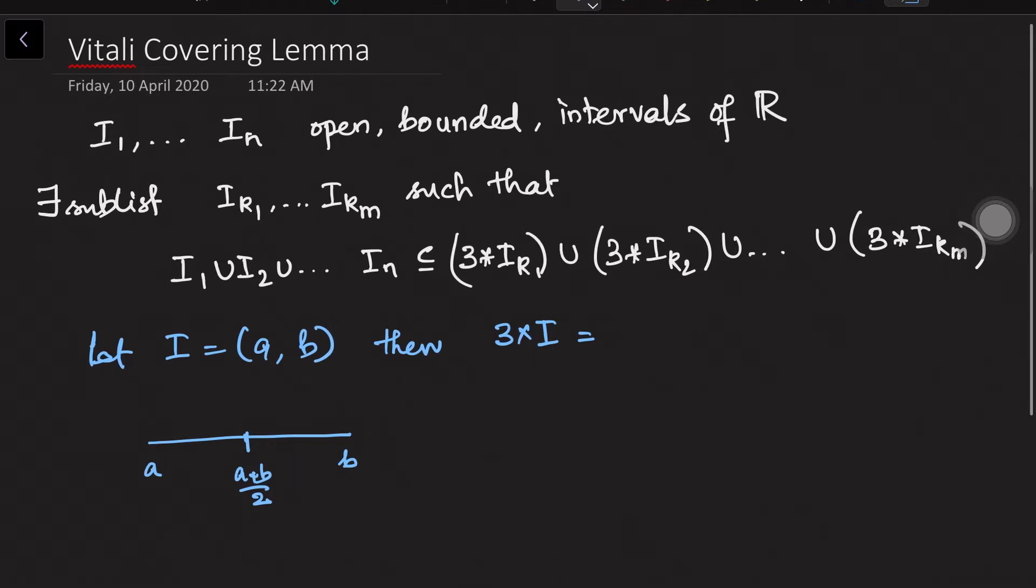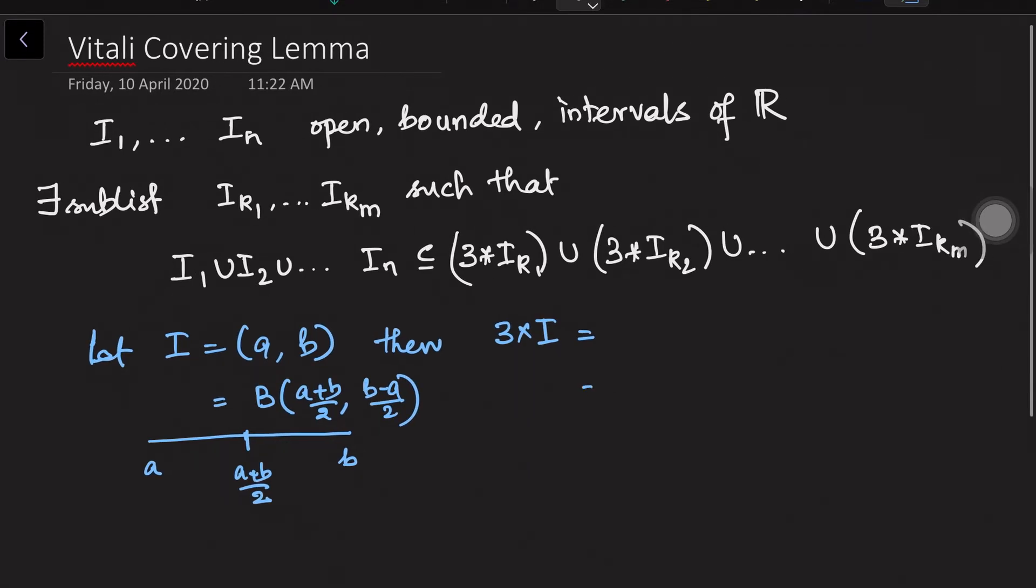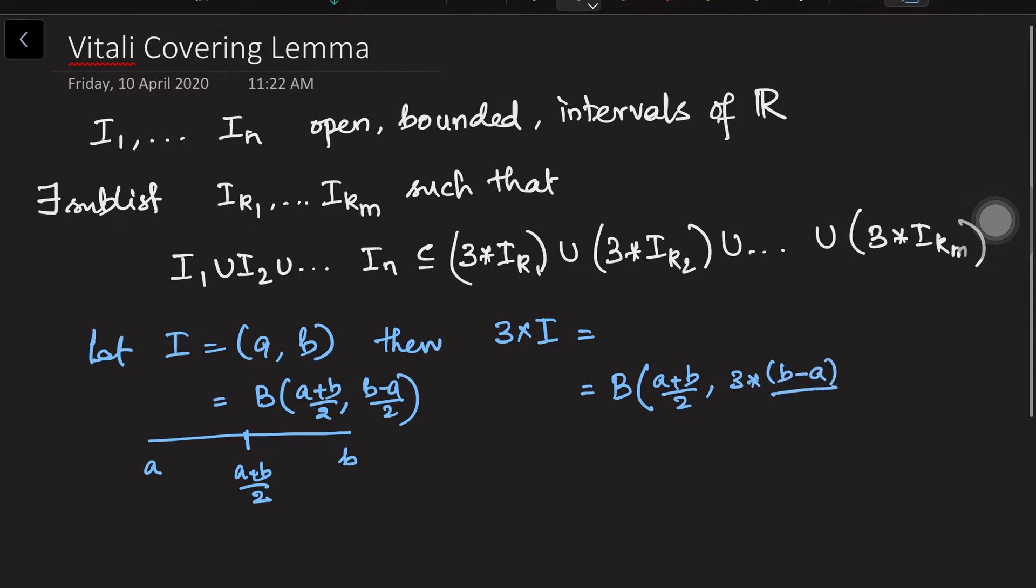this is the center which is (a+b)/2. So this is equivalently we can write it as ball centered at (a+b)/2 and of radius (b-a)/2. So what this 3i is, keeping the same center but consider the radius to be 3 times. So keep the center and multiply the radius 3 times.